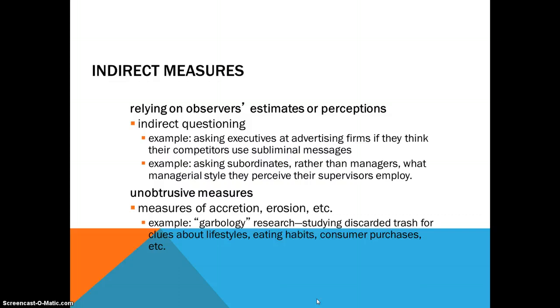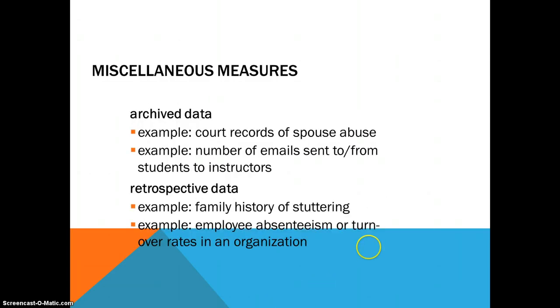There are other ways of gathering data. For example, asking people what they think about their competitors, or asking people who work for you to get their perceptions. Scientists gather data by getting samples and then analyzing them. Sometimes we can get data from court records, emails, family histories, or employee turnover in an organization—that would be called retrospective data.